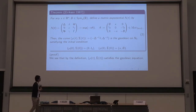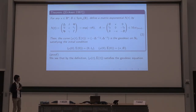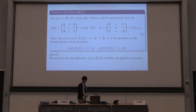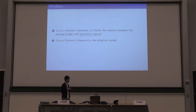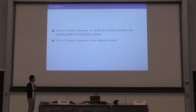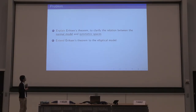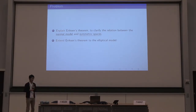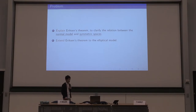We notice that the normal model is known to be a homogeneous space, and we can obtain all the geodesics of the normal model by this theorem. I'd like to raise a problem on this result, because the Eriksen theorem is very similar to the case of the symmetric space, where all the geodesics on the symmetric space can be obtained from the exponential map.